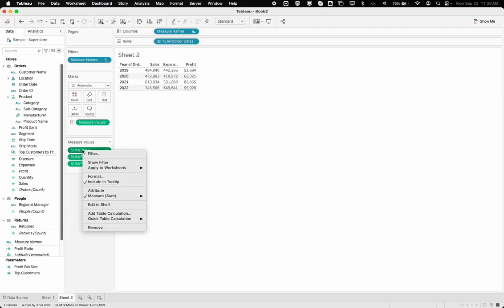I can go to quick table calculation, which is basically a calculation that occurs on the table that you're viewing. And that's how it's broken out or segregated. So basically I can say I want the percent difference.